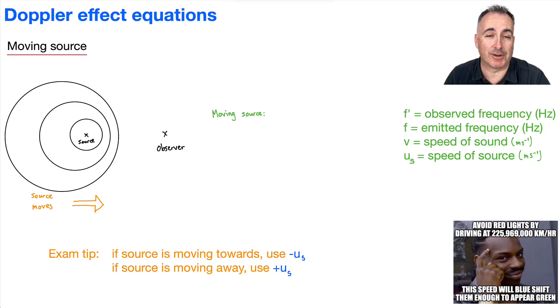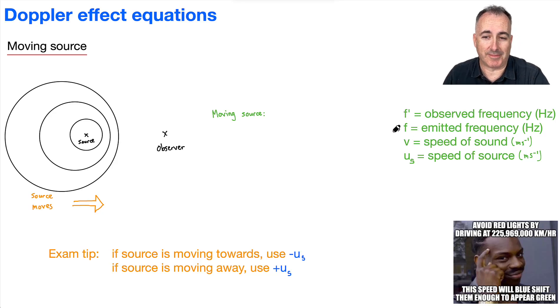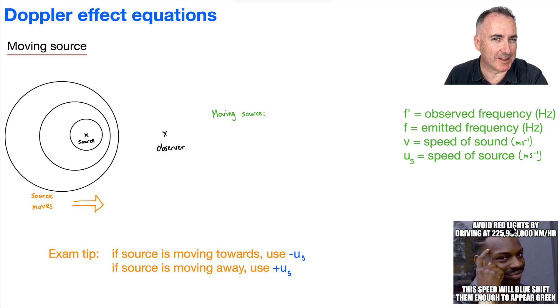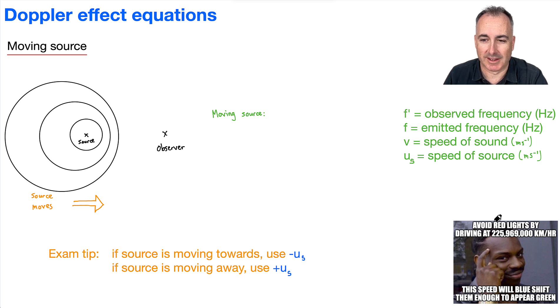Let's go over the Doppler effect equations in more detail. I put this meme right here — this is one that I made myself — avoid the red lights by driving at this speed in kilometers per hour, because that will blue shift the lights enough to appear green.